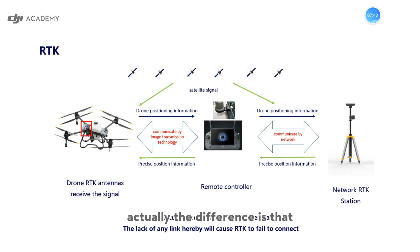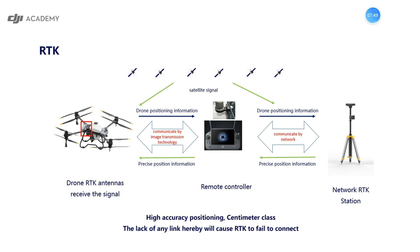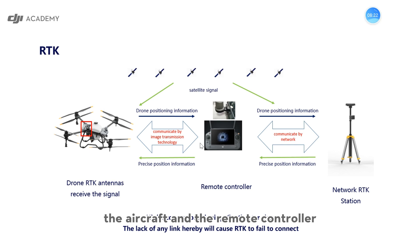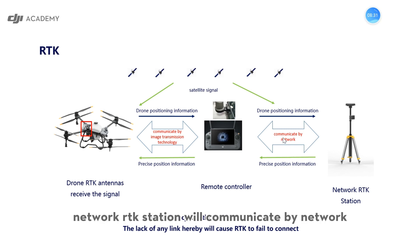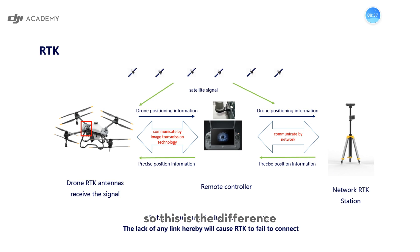Now I'd like to show you the network RTK. The difference is that we use a network RTK station rather than an RTK mobile station. When using network RTK, the aircraft and the remote controller still communicate by image transmission technology, but the remote controller and the network RTK station communicate by network. That is the key difference, though the function and principle are similar.